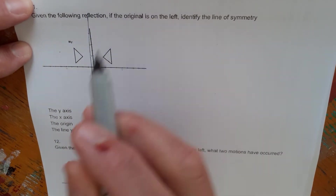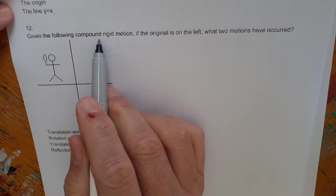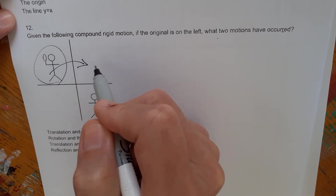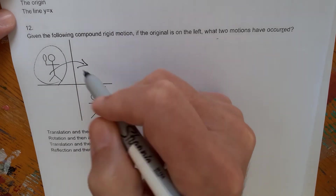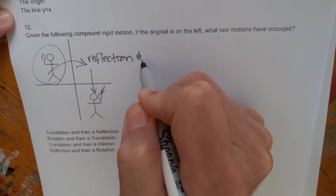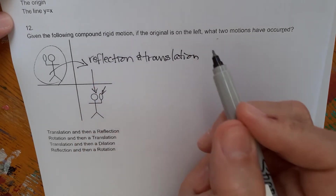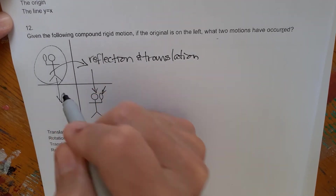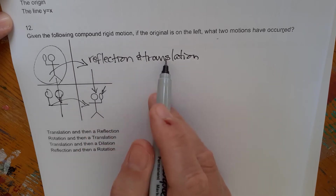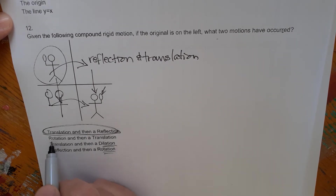There's a trend here. Another graph: identify the rigid motion — again it's a reflection about the y-axis. Then: given a compound rigid motion with the original on the left, what two motions have occurred? There's a reflection, because the held image is now on the opposite side, and also a translation. So it's either a reflection then a translation, or a translation then a reflection — a compound rigid motion.